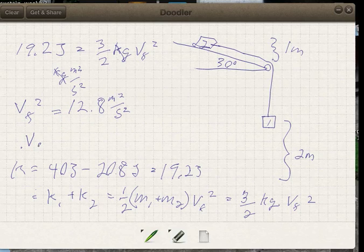And so then what is v final? We need the square root of 12.8, and it will be meters per second, square root of meters squared per second squared.